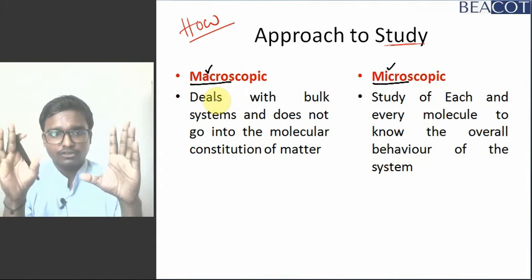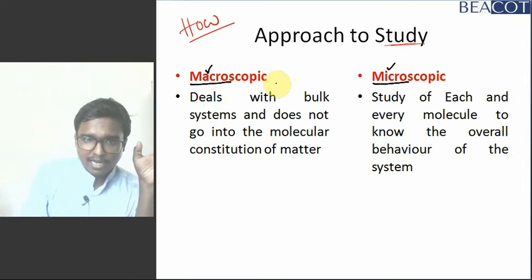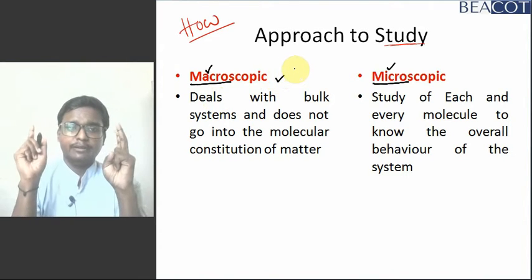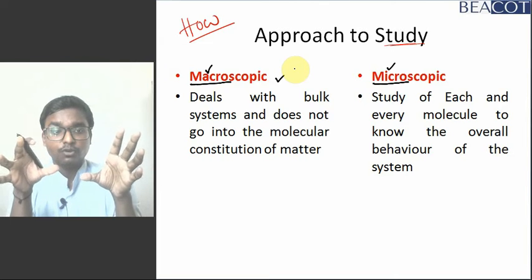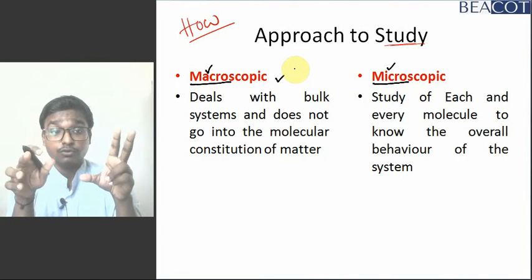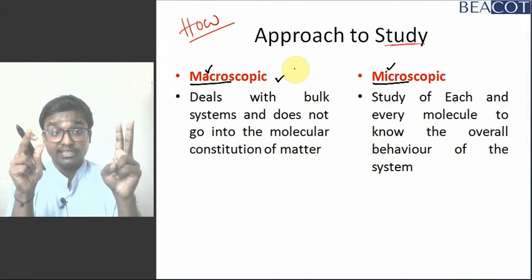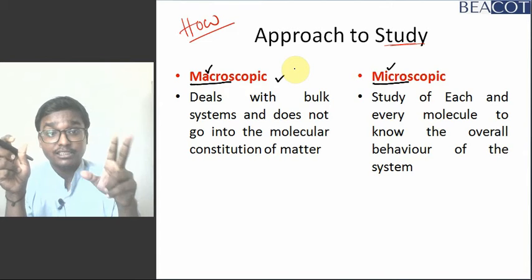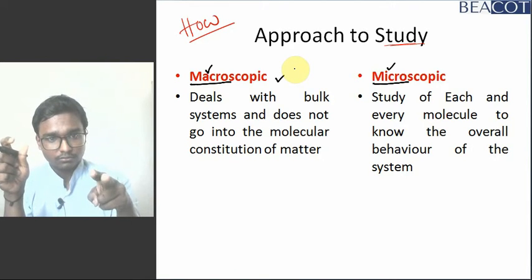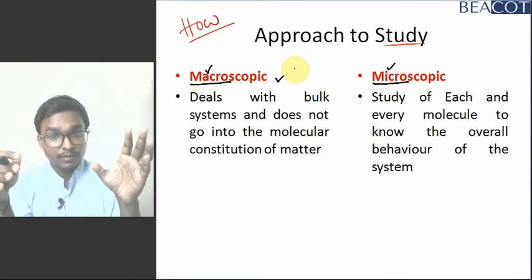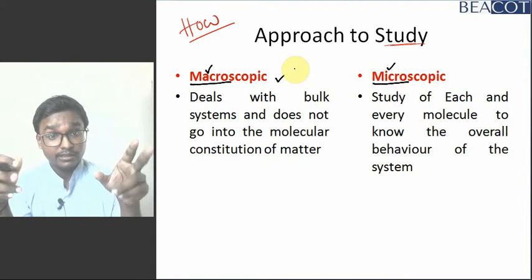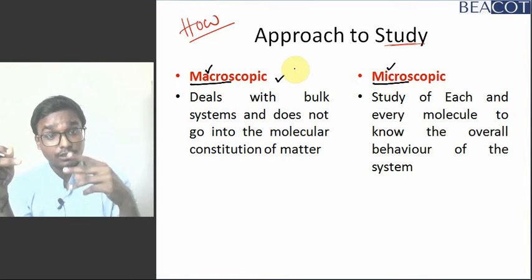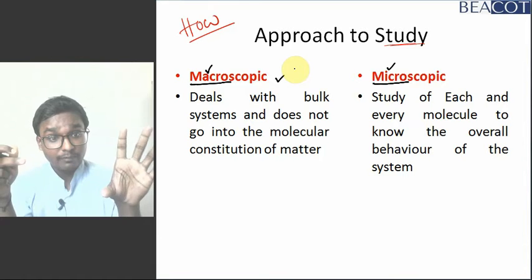Suppose in a class 40 students are there. In case of the macroscopic approach, I will group those 40 students into 4 groups — 10 students in each group. I will ask each group about their progress. I will deal with that group as a whole. That means I am dealing with some bulk quantity, some group. That means in macroscopic approach, I deal with a bulk system.